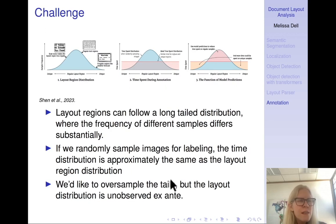Just to kind of summarize the challenges that we face. Layout regions can follow a long tail distribution where the frequency of different samples differ substantially. So you see in the belly of the distribution, you have lots and lots of fairly clean article bounding boxes. Those make up a lot of your objects. So if you're just sampling at random to label, you're very quickly going to have enough objects labeled for these straightforward objects like the standard newspaper articles. But then you also have these long tails. And there's lots of idiosyncratic things in the long tails. So if we randomly sample images for labeling, the time distribution is approximately the same as the layout distribution. Whereas what we'd like to do is to oversample the tails. But the problem is that the layout distribution is unobserved ex ante. How do we figure out what's the most informative sample to label when we don't observe that distribution in our unlabeled data because it's unlabeled data.